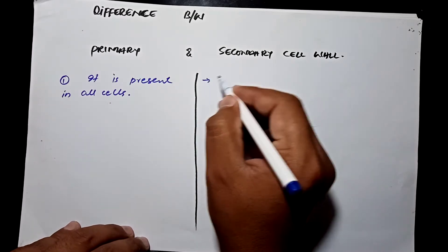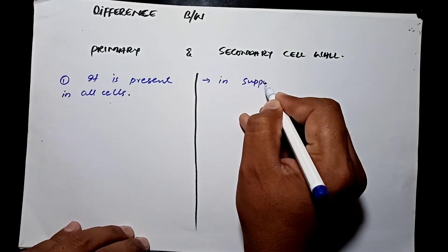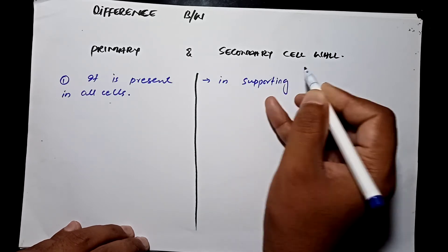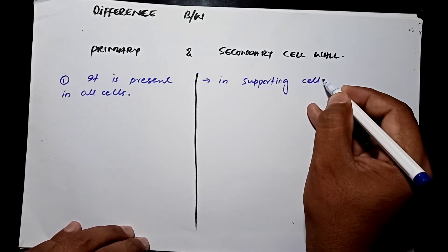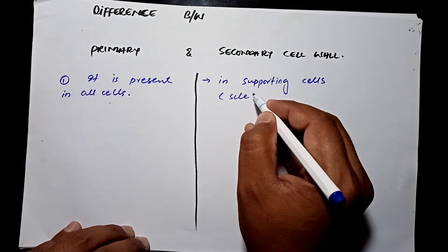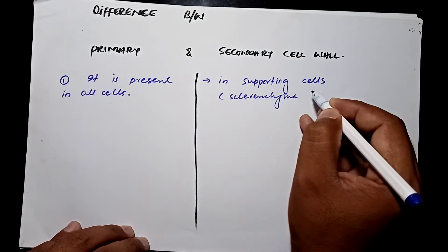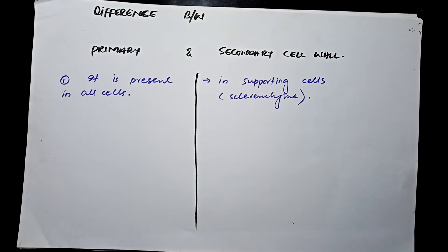Secondary cell wall is present in supporting cells. The cells which provide support to the plant are sporting cells, known as the sclerenchyma cells. So it is present in the sclerenchyma cells.